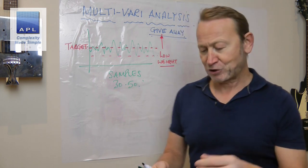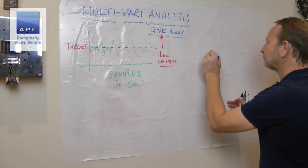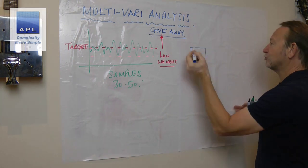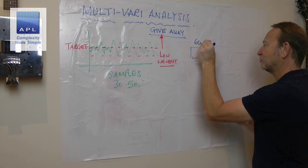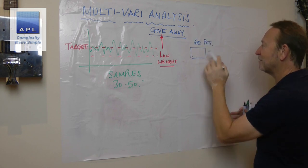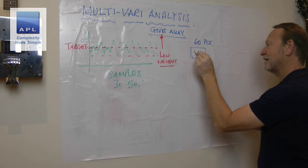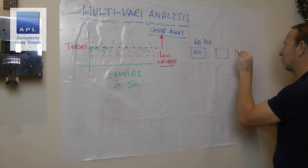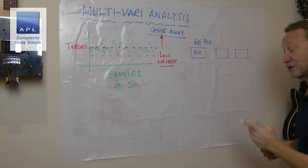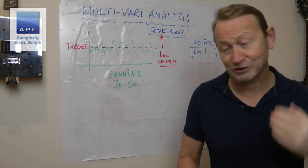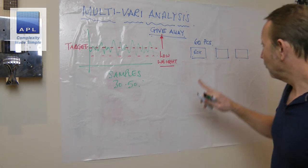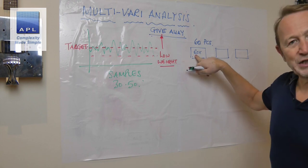What's the difference between just doing a run chart and doing a multivari analysis? Well, you have to collect the data in a special way. Now what they're doing is they're packing the goods in a box. I would say in each box there's about 60 pieces, something like that, there might be 100 pieces in each box.